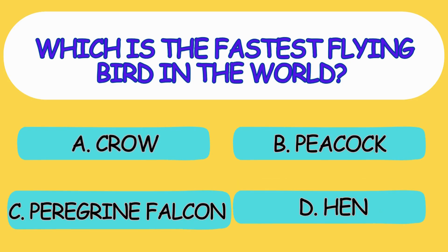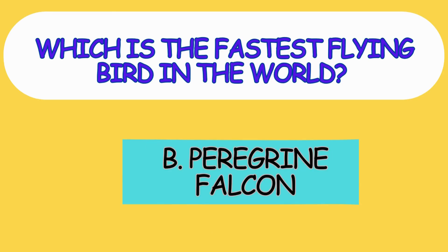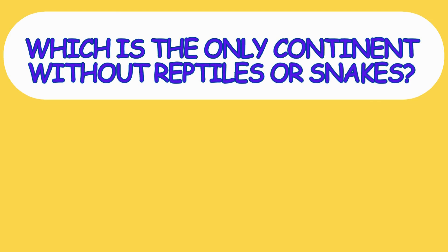Which is the fastest flying bird in the world? A. Crow, B. Peacock, C. Peregrine Falcon, D. Hen. The answer is option C, Peregrine Falcon.